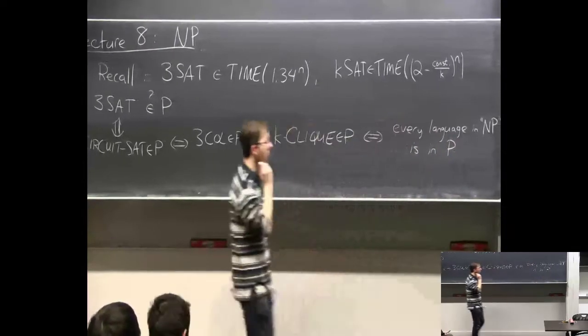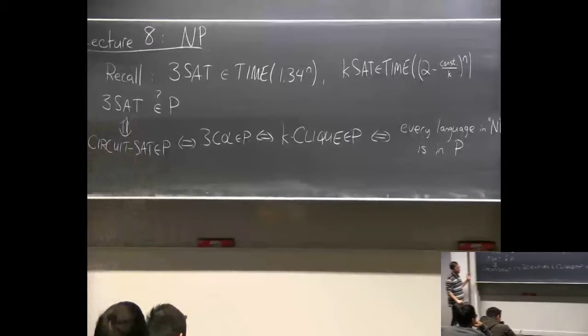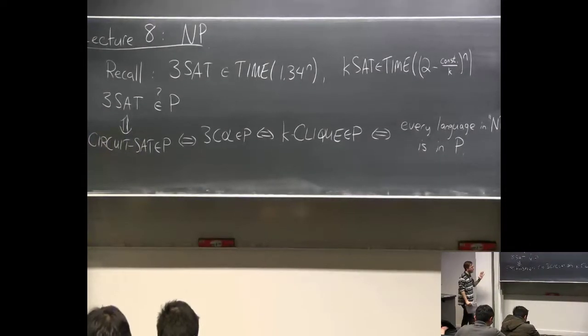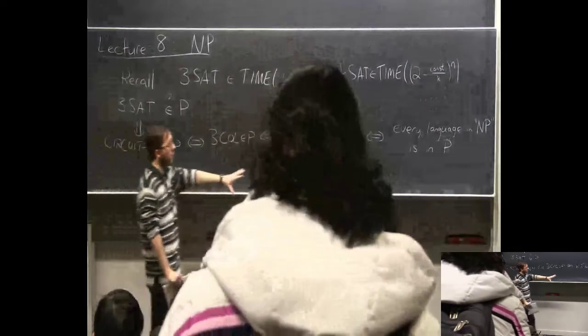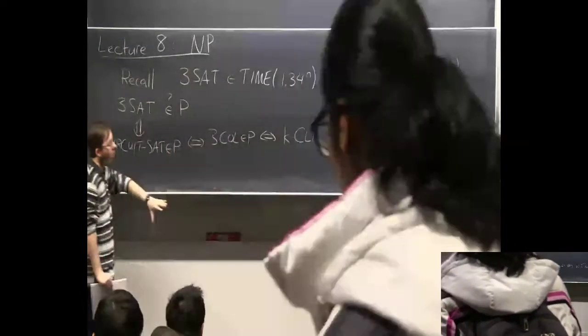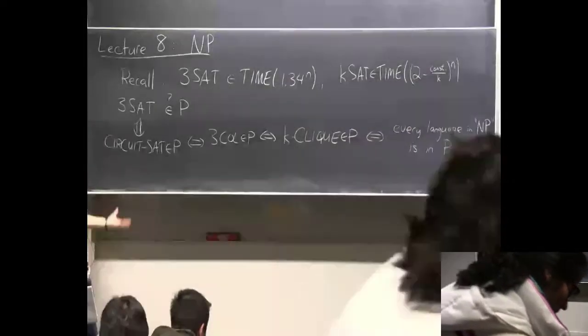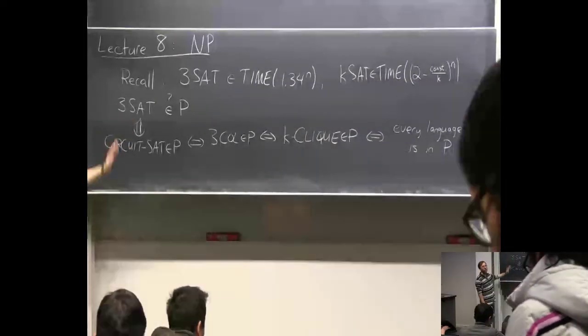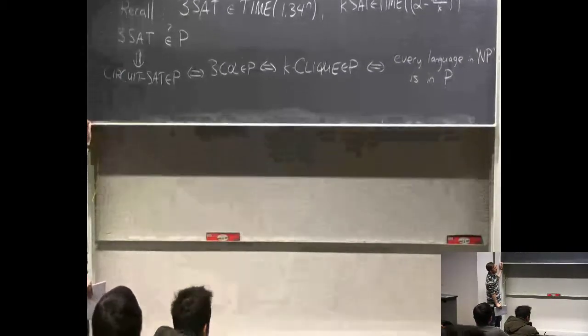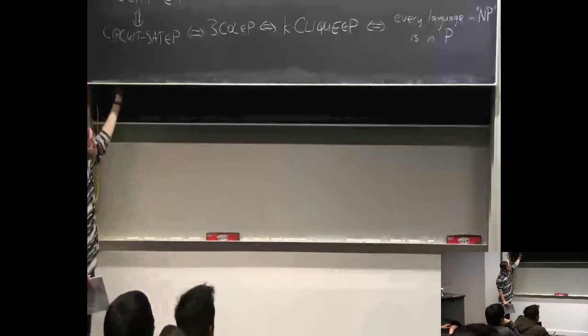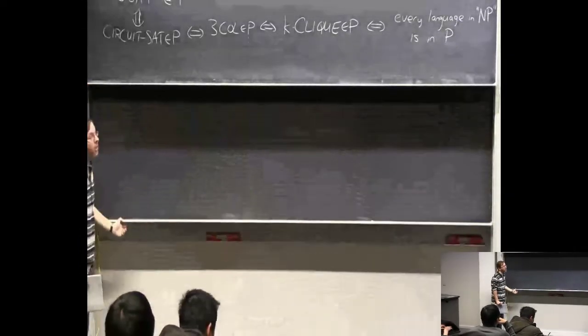NP is what we'll talk about today. It's a complexity class that contains thousands of interesting computational problems, many of which we don't know whether they can be done in polynomial time. This is the content of a theorem called the Cook-Levin theorem: all these thousands of problems are doable in polynomial time, or they're all not doable in polynomial time — they're all doable if and only if one particular one, like 3SAT, is. Since people have been working very hard for many years trying to get fast algorithms and failed, this is why we think they're probably all not in polynomial time.